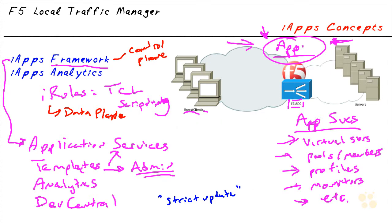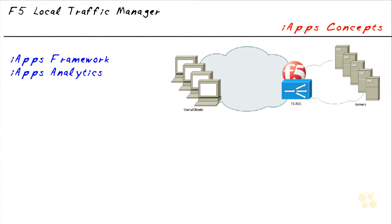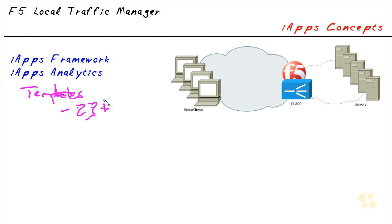Now let's talk about templates in a little more detail — this is really where all the power comes from. There are 23-plus templates included; BIG-IP 11.1 had 23 templates, and later releases may have more. By the way, iApps was introduced in BIG-IP version 11, so if you run across an older server and don't see this, that's why. You need BIG-IP software version 11.0 or later to get iApps.